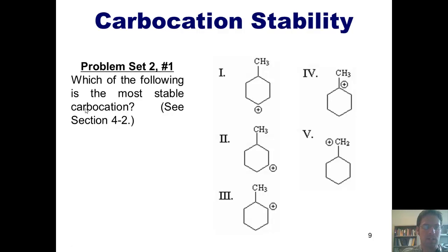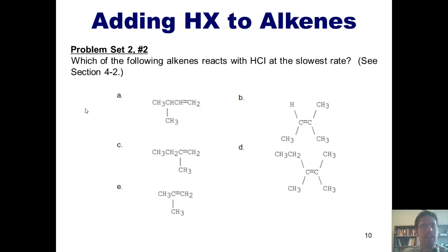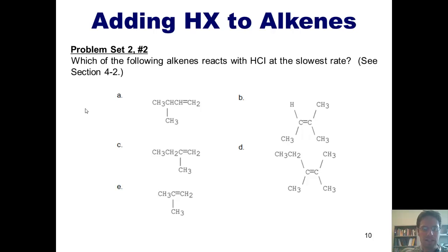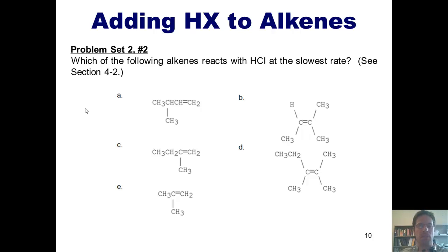This brings us to a problem set. Question: which of the following examples is the most stable carbocation? I personally believe I've given you enough information to determine the answer on your own. Here's another one: which of the following alkenes reacts with HCl at the slowest rate? I'm not going to give you the answer, but here's a hint: draw out the mechanism for every one of these five molecules reacting with HCl, then look at each of the carbocation intermediates formed. Whichever one forms the least stable carbocation intermediate will react at the slowest rate.